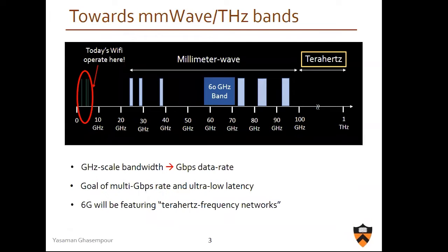To tackle this and support these data rates, we have to move into higher frequencies. Today's Wi-Fi and LTE operate here. We have 14 gigahertz of available bandwidth in the six gigahertz band alone. And if you look even further above 100 gigahertz, we have much more available bandwidth. Having a gigahertz scale bandwidth can naturally translate to gigabit per second scale data rate in principle. 6G will be featuring terahertz frequency or sub-terahertz frequency networks — what I mean is above 100 gigahertz.